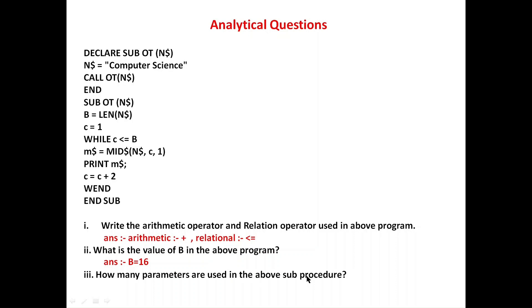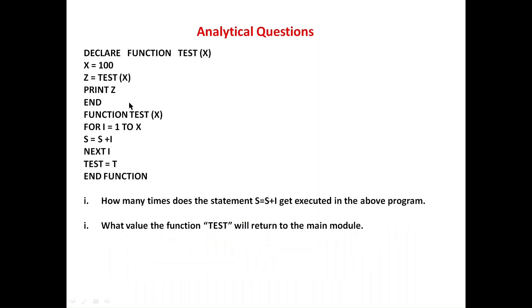How many parameters are used in the above sub-procedure? Looking at the sub-procedure, the parameter inside the bracket is N$ only — so the answer is one. Only one parameter is used. The argument passed above corresponds to this one parameter.